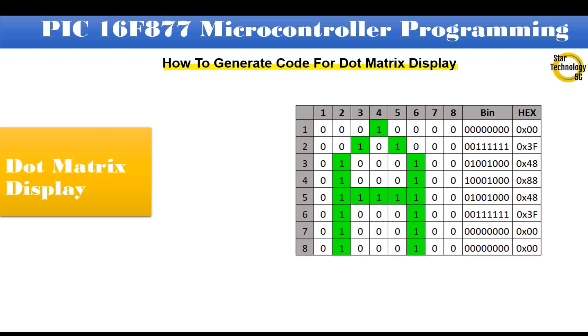How to generate code for dot matrix display. If we want to display character on dot matrix display we need some codes that should be sent via row and column. If we want to display character A on dot matrix display we need following codes. You can see in this figure. All eight rows in first column are off. We will send 0x00 code in row 1 and 0 in column 1. In second column, row 1 and row 2 are off and other rows are on. We will send 0x3F code in row 2 and 1 in column 2.